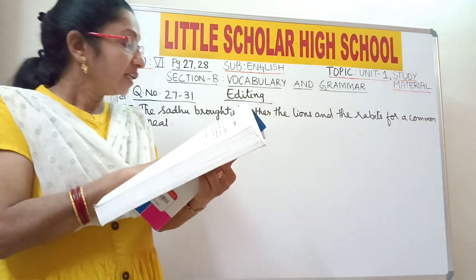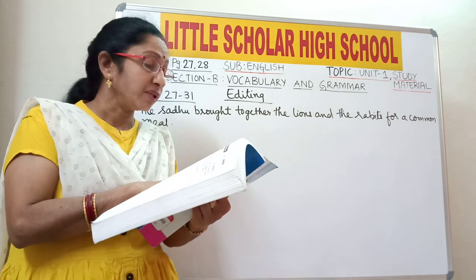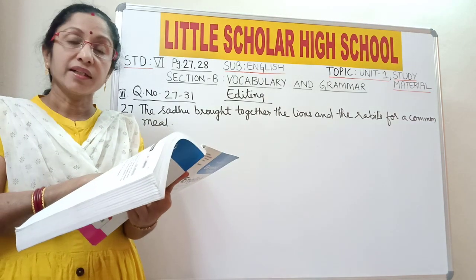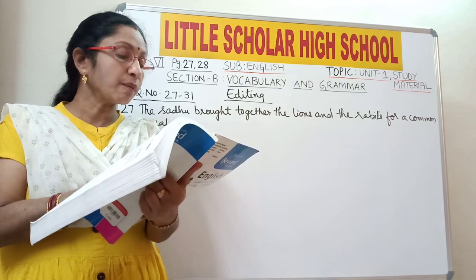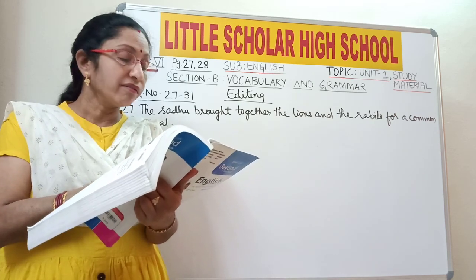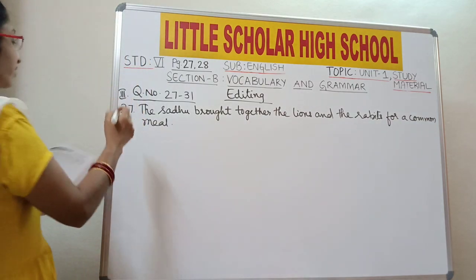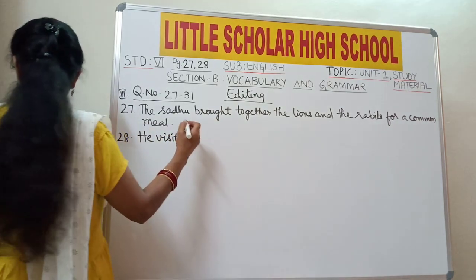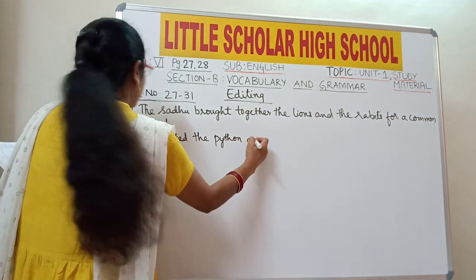Question number 28: 'He visits the python and the viper and had a long chat with them.' In the previous sentence the verb 'brought' was in past tense. Here 'visits' is in present tense, but according to the passage it should be changed to past tense 'visited'. Write: 'He visited the python and the viper and had a long chat with them.'